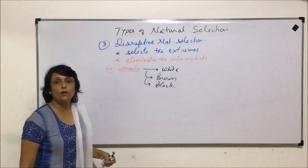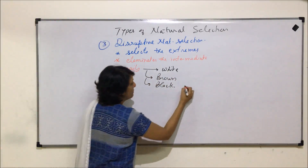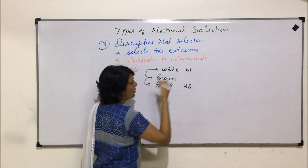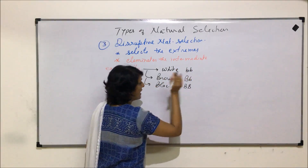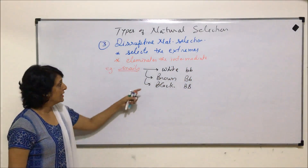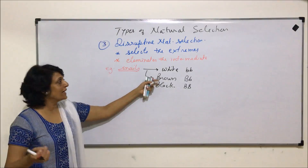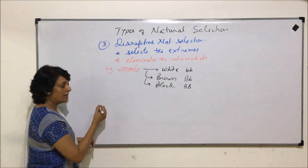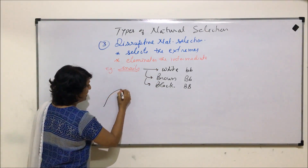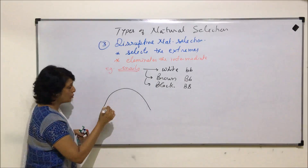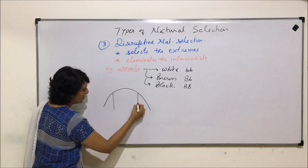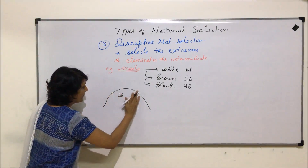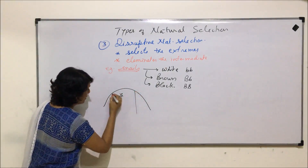To understand disruptive selection, consider snails that are black, white, and brown. The black snail has a homozygous dominant genotype, the white snail has a homozygous recessive genotype, and the brown snail is heterozygous. So one extreme is black, the other extreme is white, and the intermediate is brown. Originally, the three types exist in roughly equal numbers.